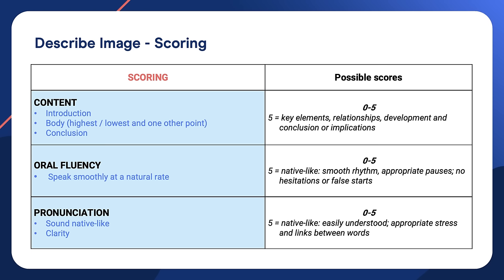So here is how you are scored for describe image. If possible, give yourself a score out of five for content for each of the images you just described. Content means that you introduce the image, describe the key features — maybe the highest and lowest points, or some other obvious part — and then you concluded your description with a single sentence. Oral fluency means that you didn't get flustered, you didn't hesitate too much, you spoke smoothly and with rhythm. And pronunciation means you focused on clarity and didn't mumble.